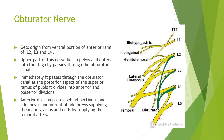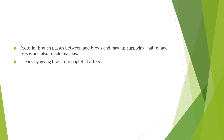The obturator nerve originates from the ventral divisions of the anterior rami of L2, L3, and L4. The upper part of this nerve lies in the pelvis and enters the thigh by passing through the obturator canal, at the posterior aspect of the superior ramus of the pubis. It then divides into anterior and posterior divisions. The anterior division passes behind pectineus and adductor longus and in front of adductor brevis, supplying them, then supplies gracilis and ends by supplying the femoral artery. It supplies all the muscles of the medial compartment.